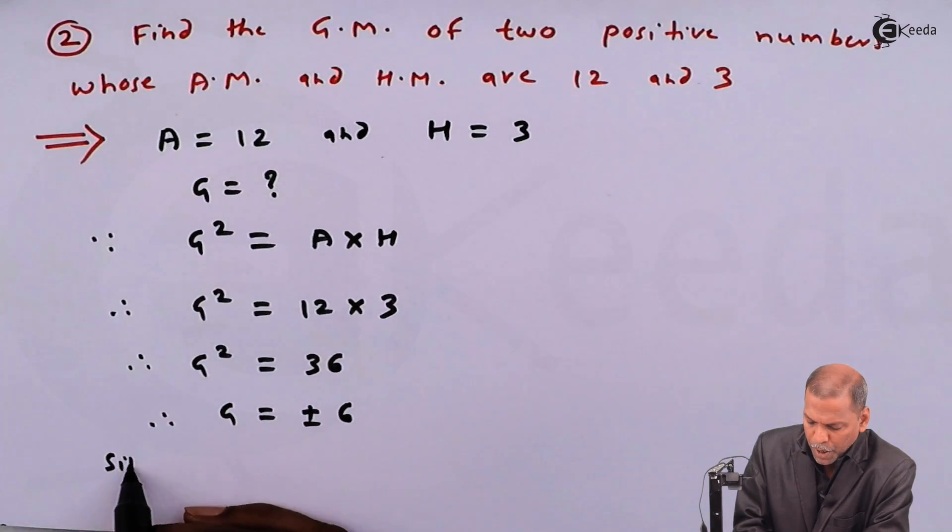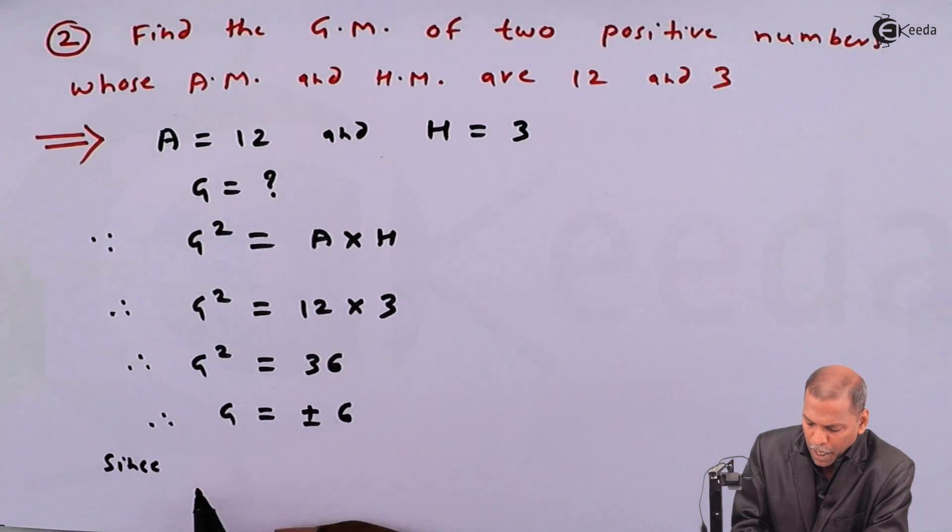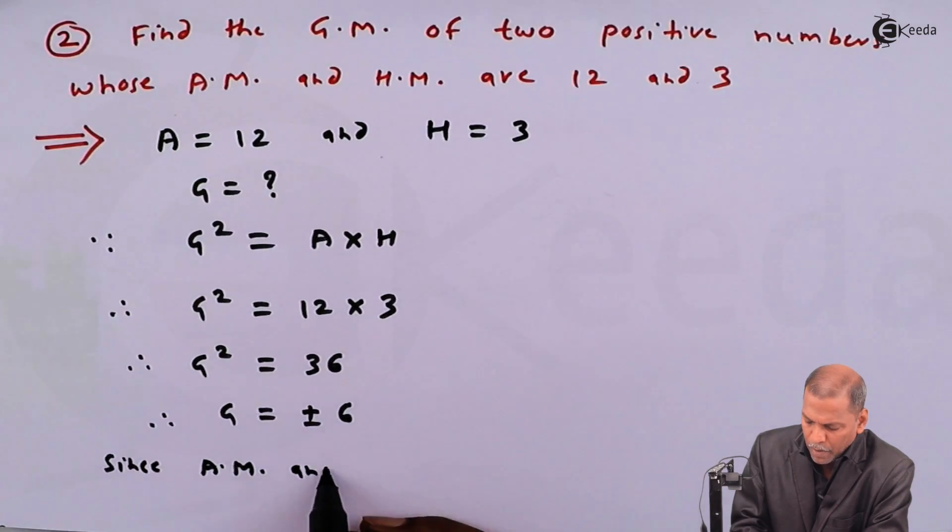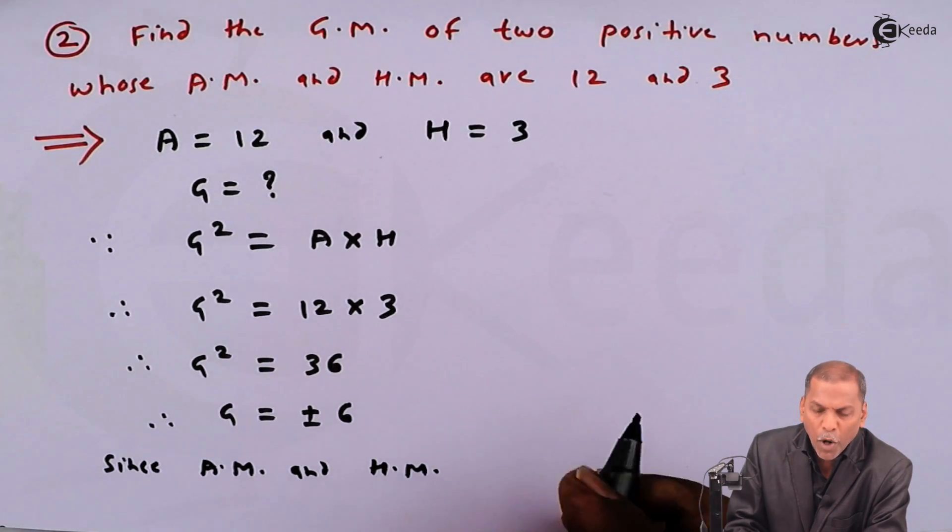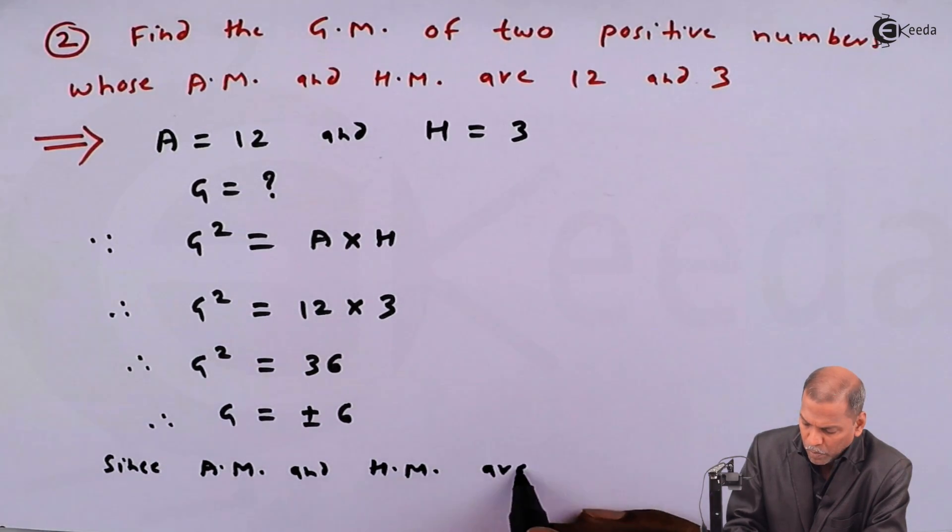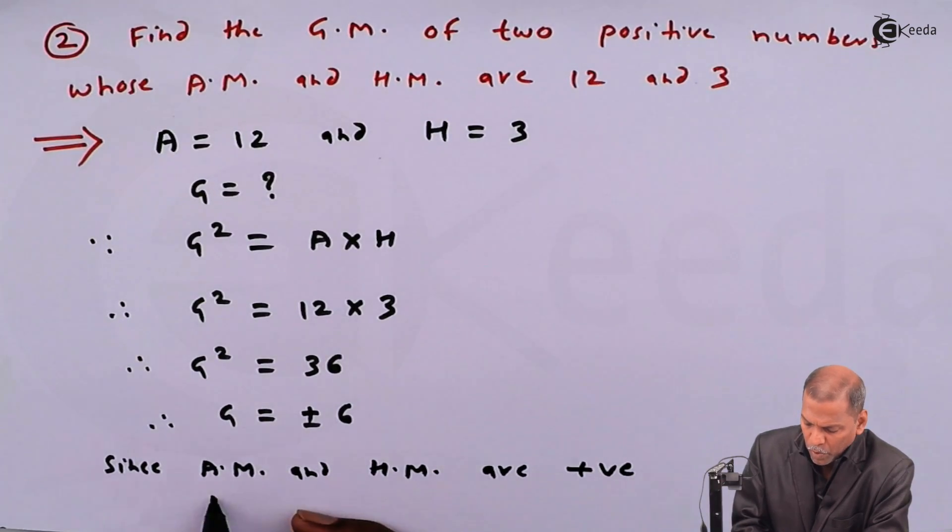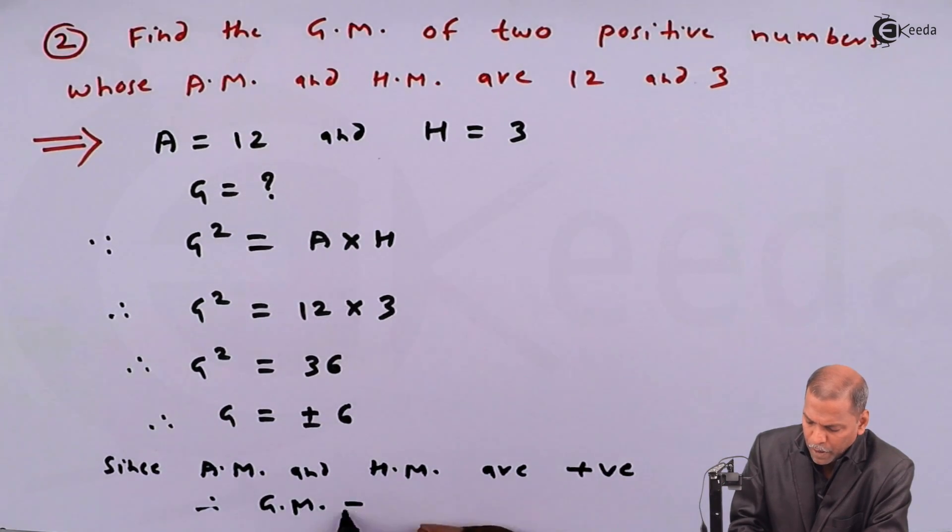Now since in this case, arithmetic mean and harmonic mean are given as positive, so therefore geometric mean G is equal to 6.